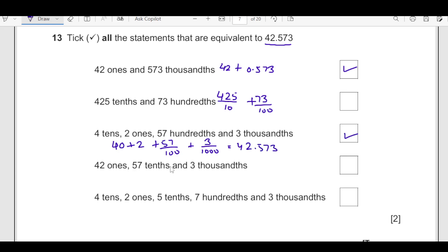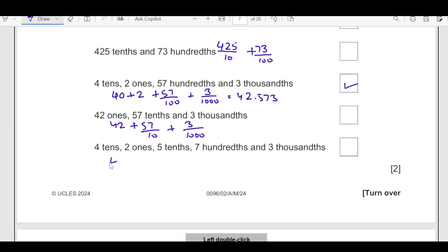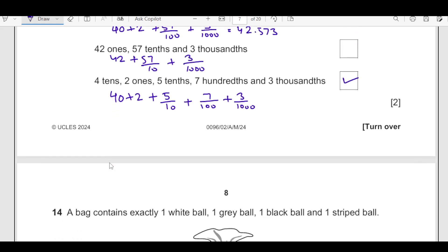If you do this, this is going to be 42.573 which is equivalent to that. So this is correct. Then 42 ones plus 57 tenths and 3 over 1000. When you do this, this is not going to come equal. The next one is 4 tenths is 40, 2 ones is 2 and 5 tenths is 5 over 10 then we have 7 hundredths then we have 3 over 1000. As you can see, this will be 42.573. So this is also correct. Go one by one to choose these correct number.